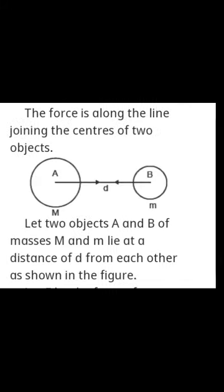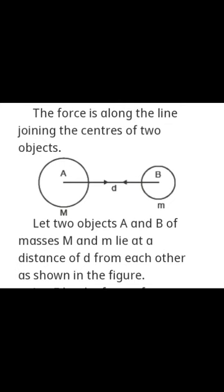Here is the figure. Let two bodies A and B of masses capital M and small m lie at a distance d from each other, as shown in the figure.